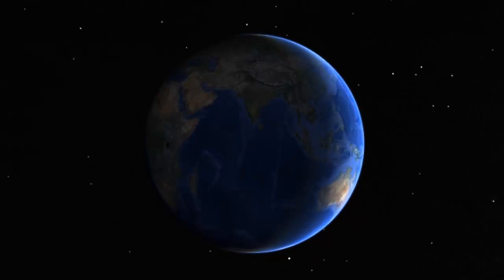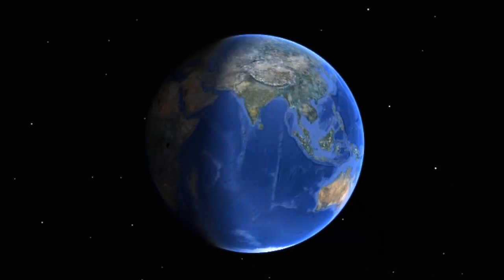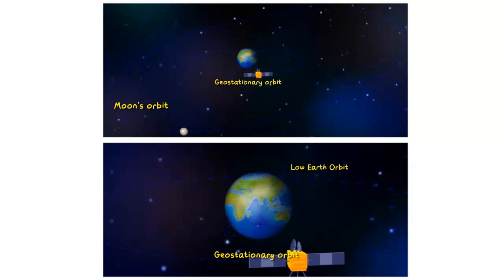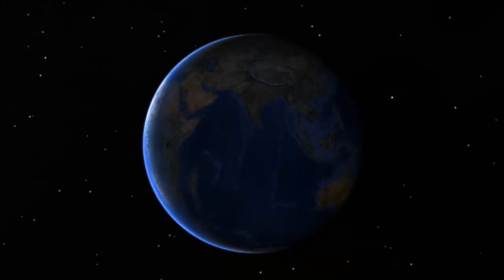This particular satellite is parked 36,000 km above the Indian Ocean. Satellites orbiting at this altitude have an orbital period of 24 hours, so they revolve around the Earth at the same rate as the Earth's rotation. This is why the Earth, even though it's spinning, looks stationary from this satellite.